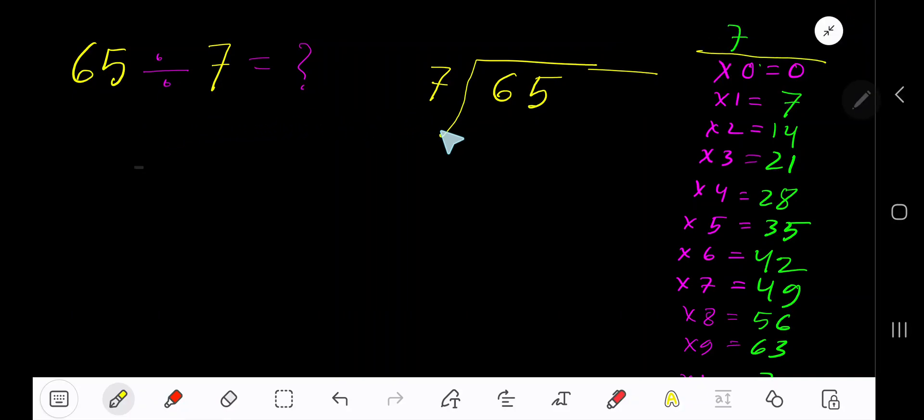65 divided by 7. Here 7 is a divisor, so we need the multiplication table of 7. 7 times 0 is 0, 7 times 1 is 7, 7 times 2 is 14, 7 times 3 is 21, 7 times 4 is 28.